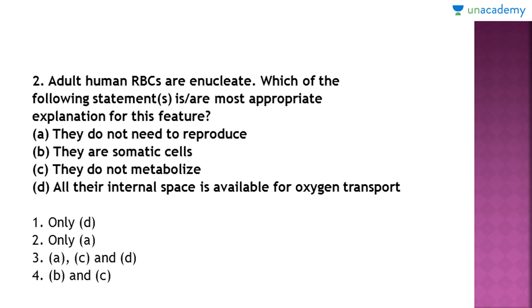Let's move on to the next question. Adult human RBCs — red blood corpuscles — are enucleate, meaning they don't have a nucleus. Which of the following statements is the most appropriate explanation for this feature? Statement A: they do not need to reproduce. B: they are somatic. C: they do not metabolize. D: all of the internal space is available for oxygen transport.